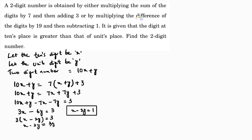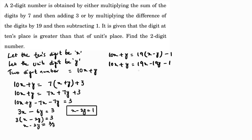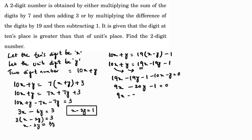Second condition: the two digit number is obtained by multiplying the difference of the digits by 19 and then subtracting 1. So 10x plus y equals 19(x minus y) minus 1, giving 10x plus y equals 19x minus 19y minus 1. Rearranging: 19x minus 10x minus 19y minus y minus 1 equals 0, so 9x minus 20y equals 1. This is the second equation.